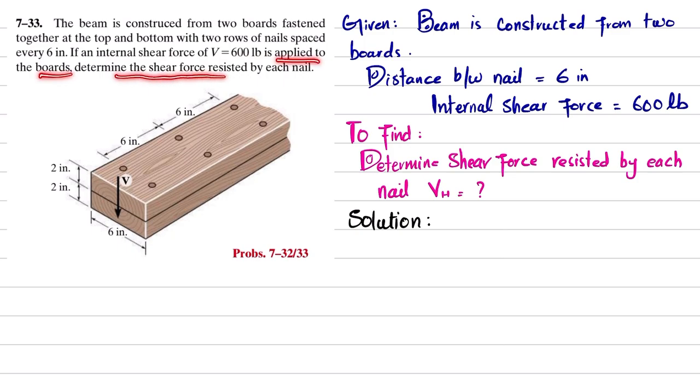You can see these are the two boards that are nailed together to form a beam, and there are two rows of nails. The distance between each nail is six inches, and there is an internal shear of 600 pounds applied.